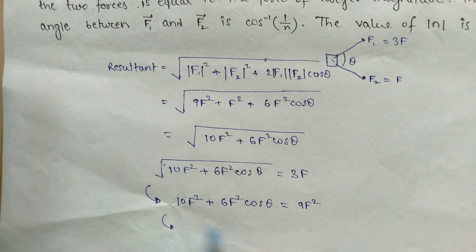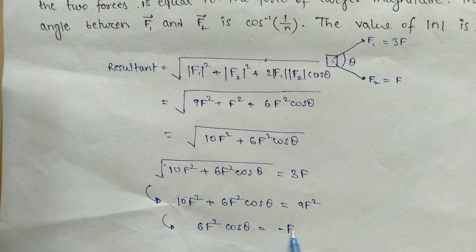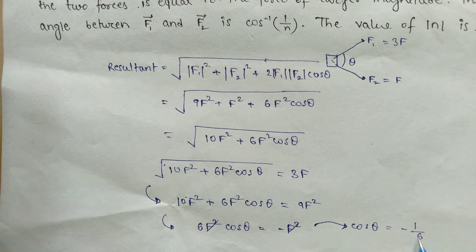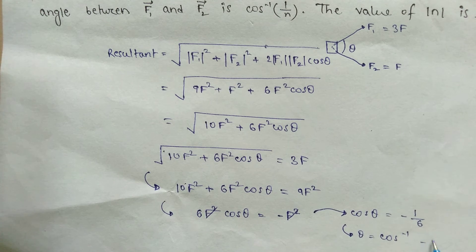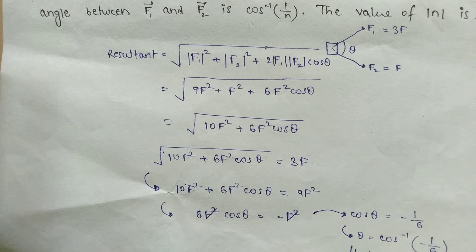From 9F² = 10F² + 6F²cosθ, the F² terms cancel to give 6F²cosθ = -F², so cosθ = -1/6. Therefore θ = cos⁻¹(-1/6), giving n = 6 and mod of n equals 6.